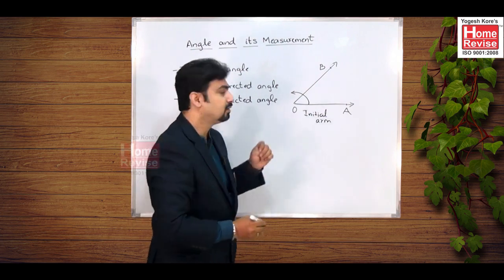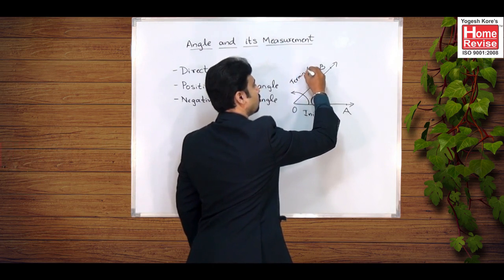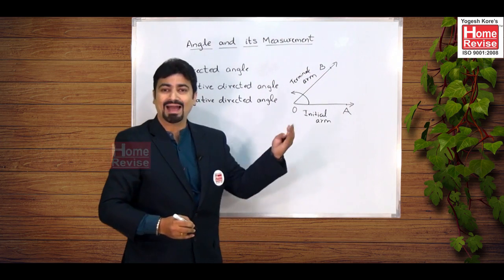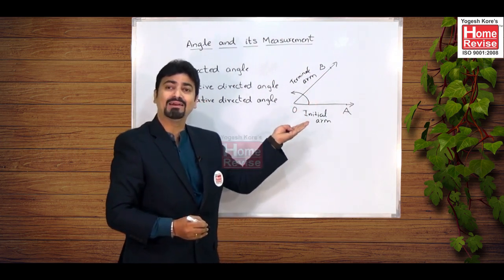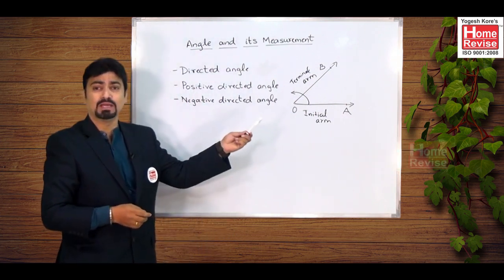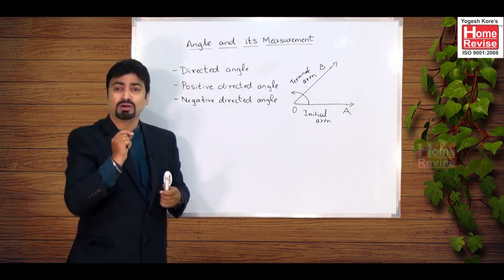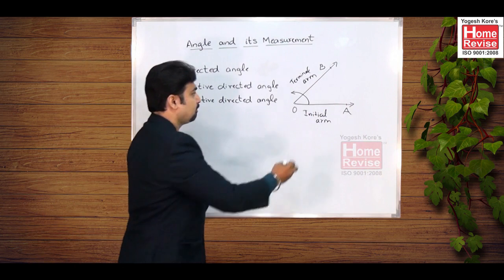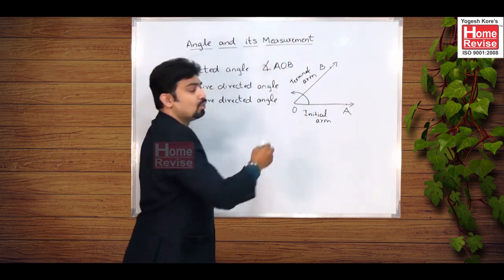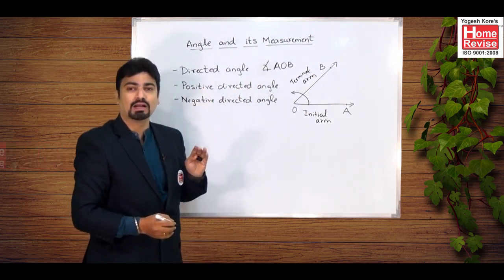So OB will be the terminal arm. So we have angle AOB drawn in anticlockwise direction where direction is important. Hence angle AOB will be known as directed angle and this is labeled by or named by... We see that we have drawn a small arc here which indicates it is a directed angle and not a normal angle.